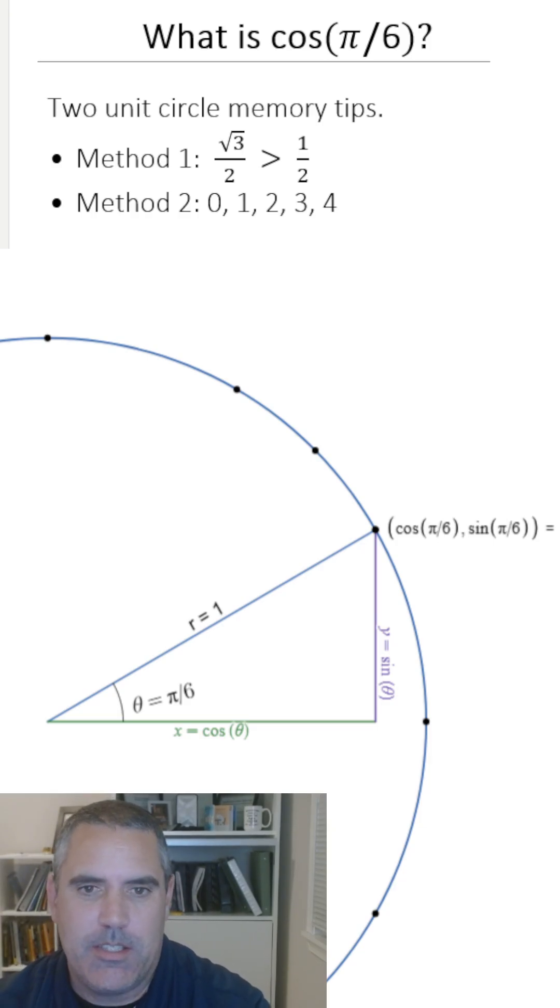The first tip is just know which is bigger. Here, if you're dealing with 30 degrees or 60 degrees, you're going to know that sine or cosine is square root of 3 over 2 or a half.